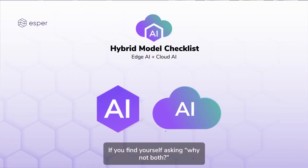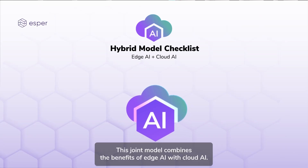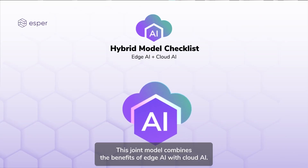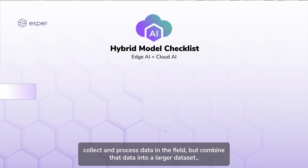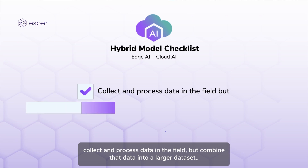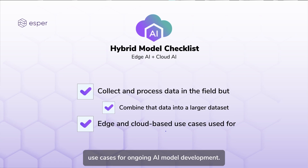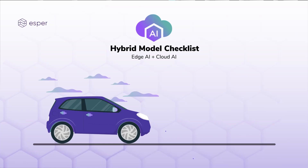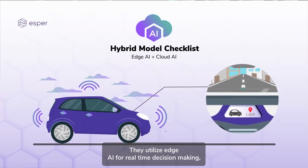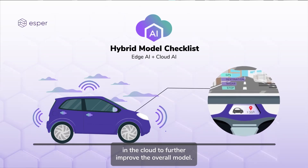If you find yourself asking 'why not both?' then a hybrid deployment model might be the ideal choice. This joint model combines the benefits of edge AI with cloud AI — it might be a good choice if you want to collect and process data in the field, combine that data into a larger data set, or utilize both edge and cloud-based use cases for ongoing AI model development. Self-driving cars are a good example: they utilize edge AI for real-time decision-making, but the data from each drive is uploaded and processed in the cloud to further improve the overall model.